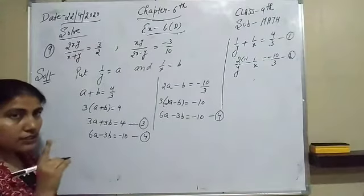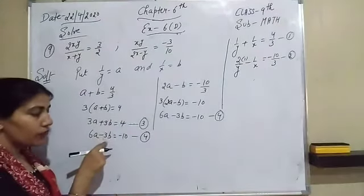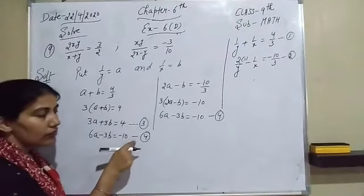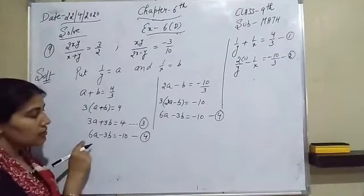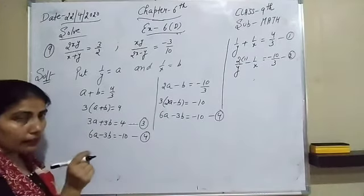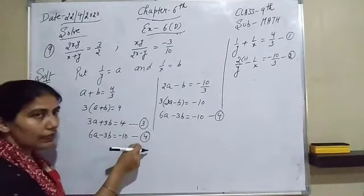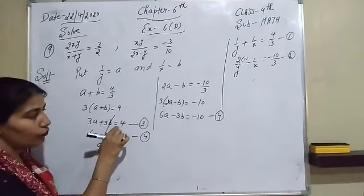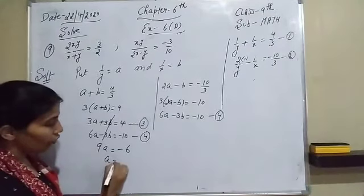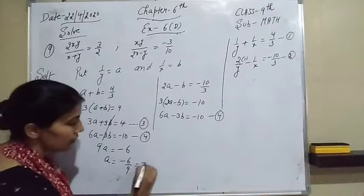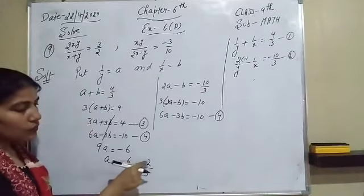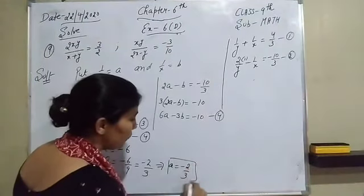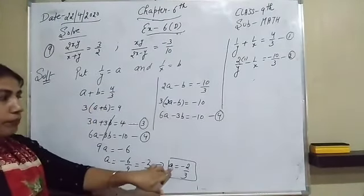Adding equations 3 and 4: the b terms cancel. We get 3a + 6a equals 4 + (−10), so 9a equals −6. Therefore the value of a is −6/9, which simplifies to −2/3.